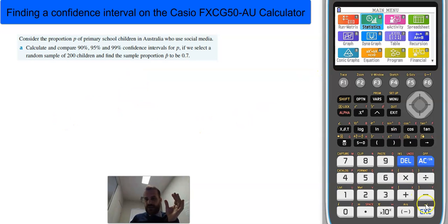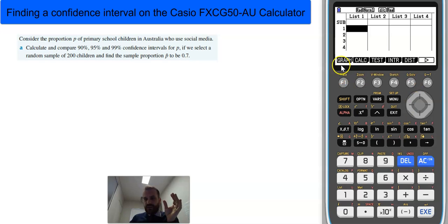We've got stats mode here. Now, your screen should look like this. If it doesn't, just press exit until it does. And then you're looking for interval. Let's click interval. We want a Z interval, and we want this one, proportion.